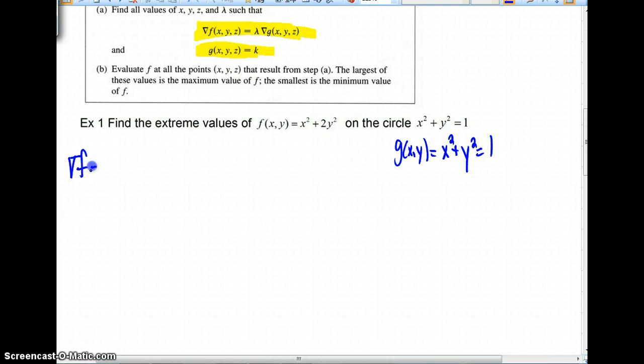So let's find our gradient. Gradient of f. Well, what's the derivative of f with respect to x? Well, very quickly, I hope we'd agree, that would be 2x. How about our derivative of our function with respect to y? We would quickly get 4y. How about our gradient of g? Very similar, we can look at this as just saying that we'd have the derivative of this function with respect to x. We'd get 2x. Over here, we'd have 2y.